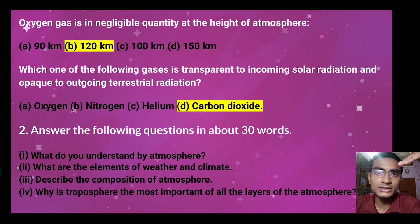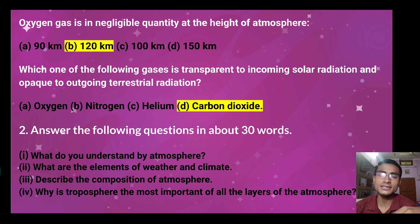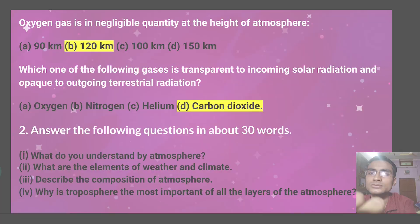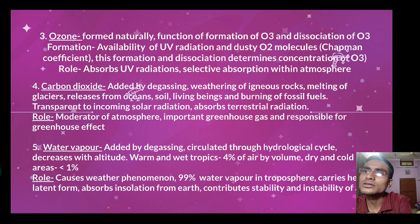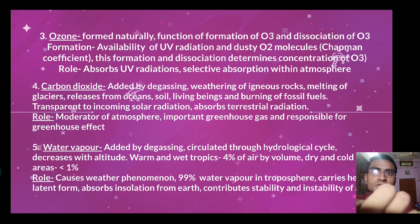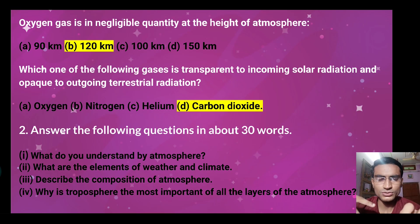The next MCQ: at a height of 128 km in the atmosphere, oxygen and hydrogen quantity become completely negligible. The next MCQ: which of the following gases is transparent to incoming solar radiation but opaque to outgoing terrestrial radiation? We discussed this — for carbon dioxide, we noted it is transparent to incoming solar radiation and absorbs outgoing terrestrial radiation. So the correct option is carbon dioxide.